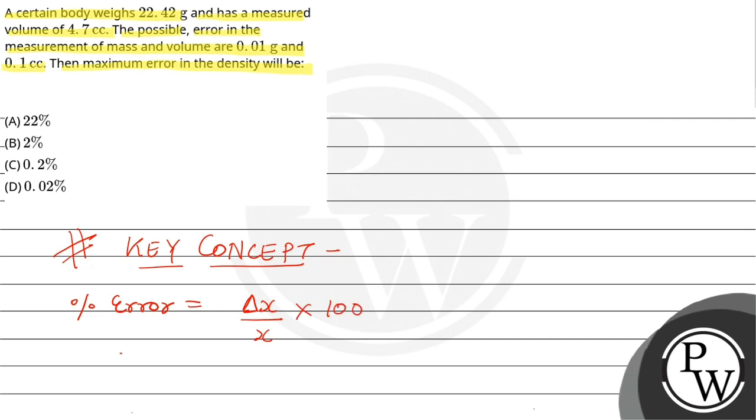We are given a mass which is 22.42 grams with error in mass which is 0.01 grams. We are given a volume which is 4.7 cubic centimeters and error in volume which is 0.1 cc.